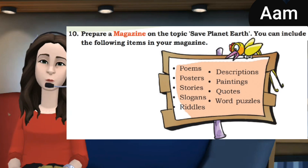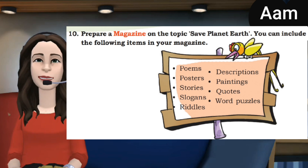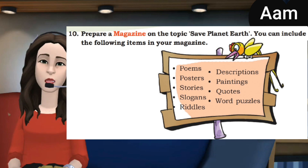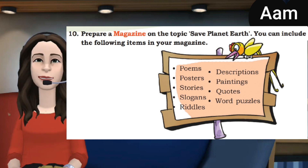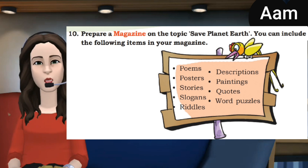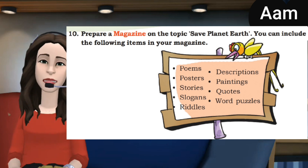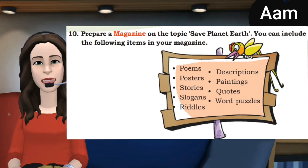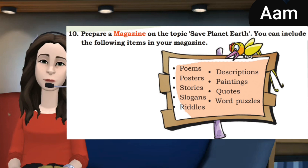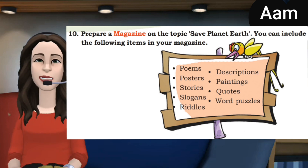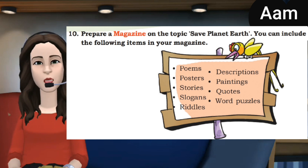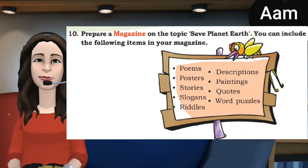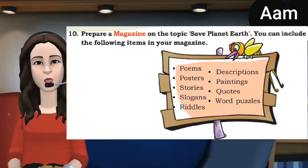Activity 10: Prepare a magazine on the topic 'Save Planet Earth.' You can include the following items: poems, posters, stories, slogans, descriptions, paintings, cards, word puzzles, etc. Activity 10 is not much important; you can do this activity when you have any free time.